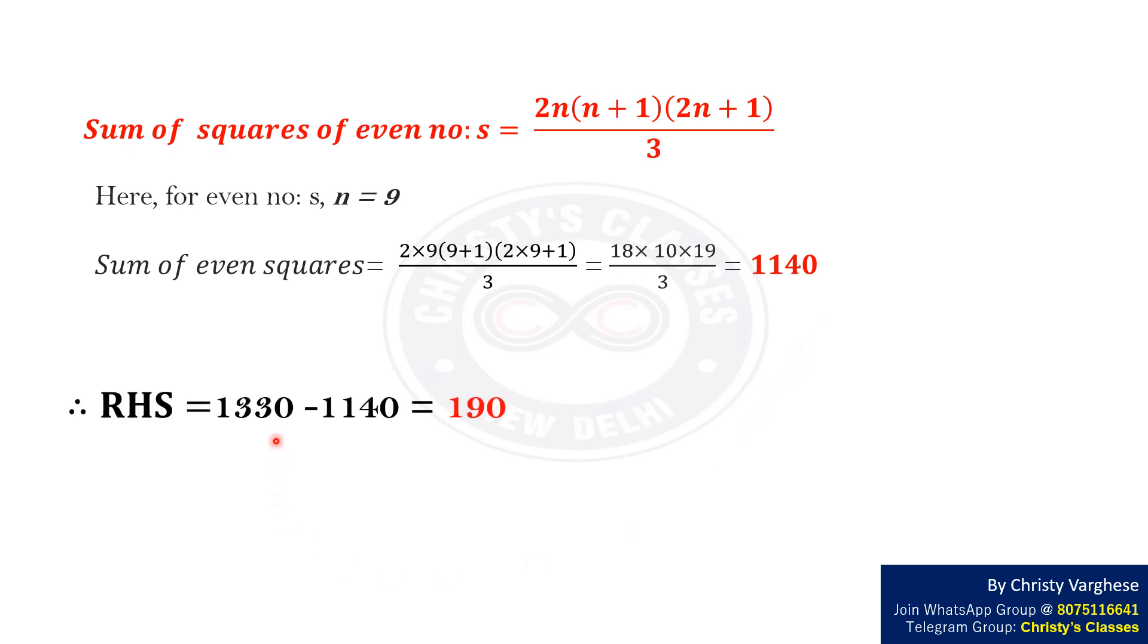Therefore, the required answer is 1330 minus 1140 which equals 190. Hence, the right answer to the question is option D.